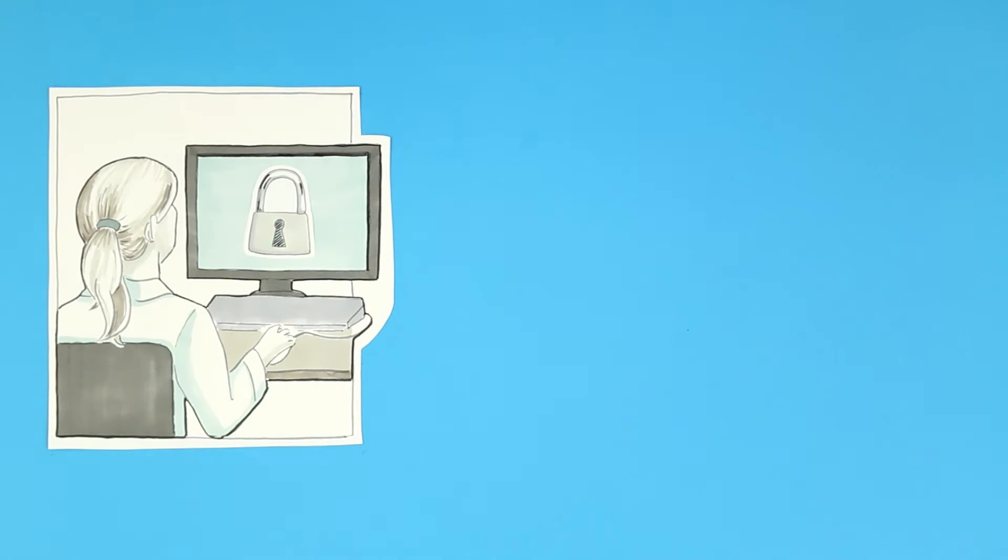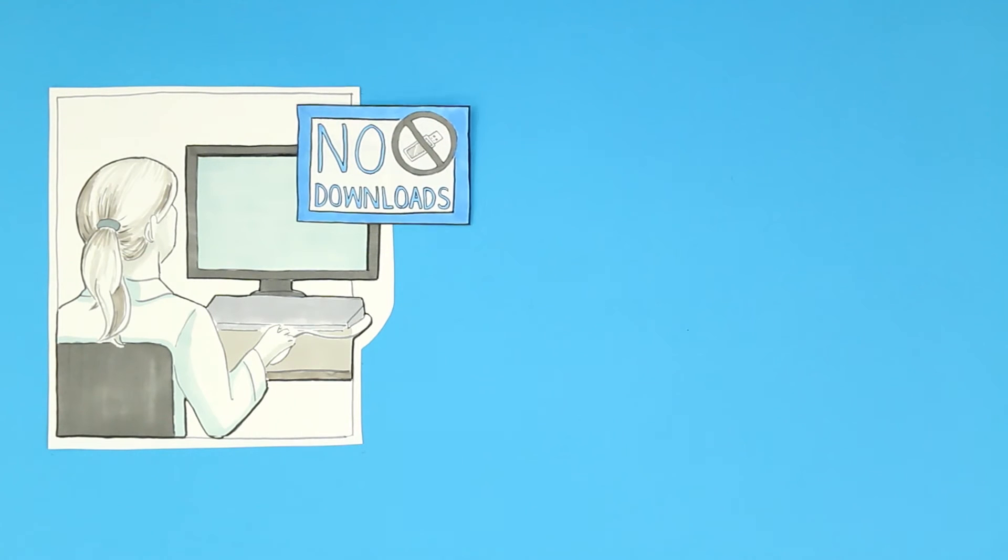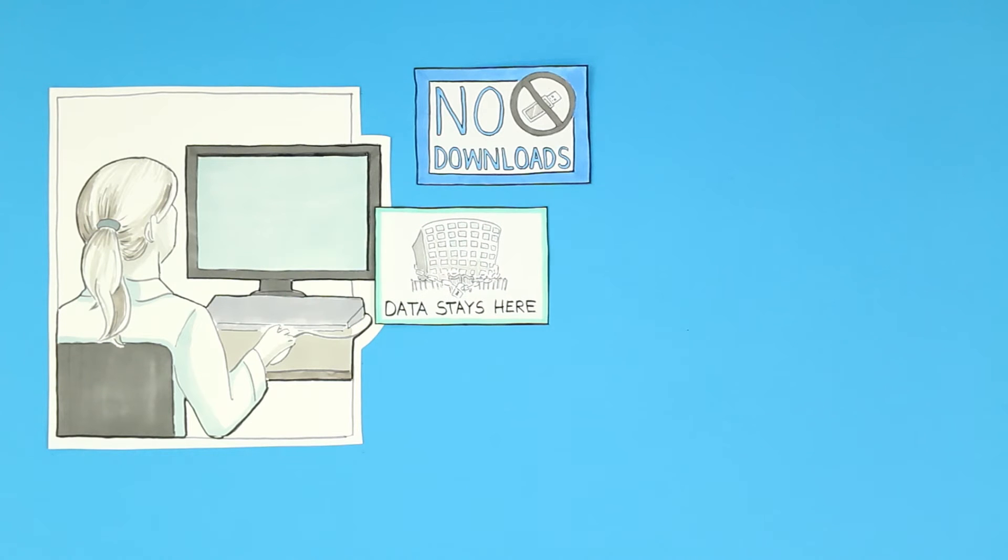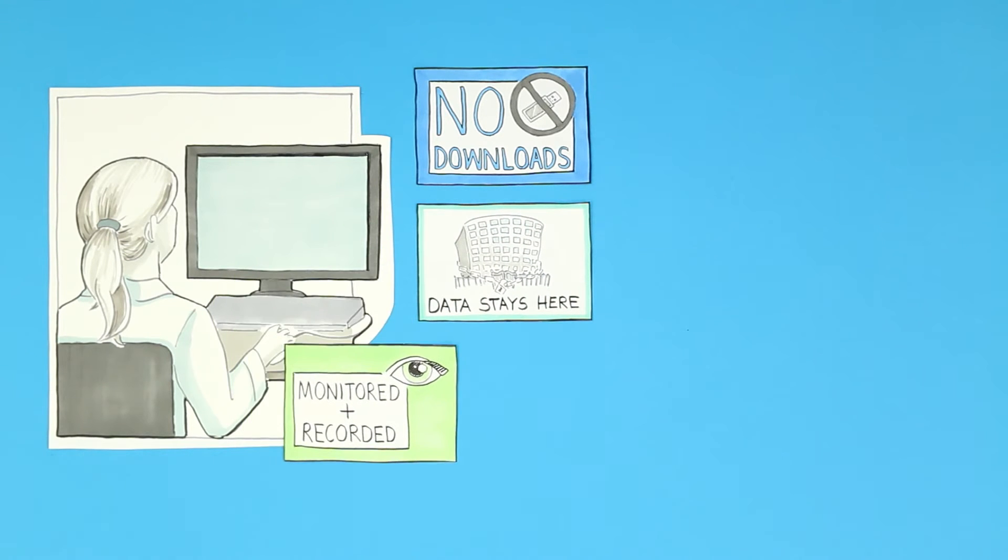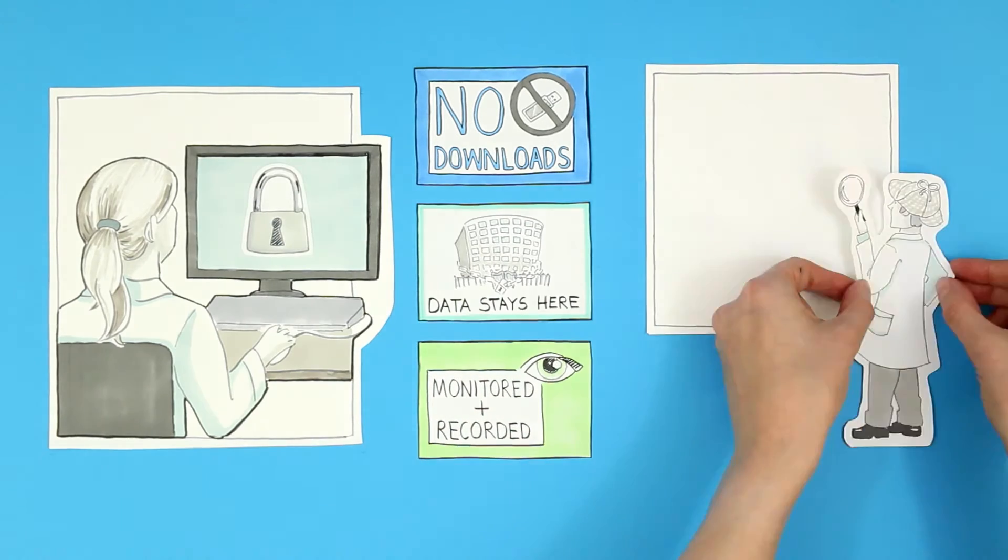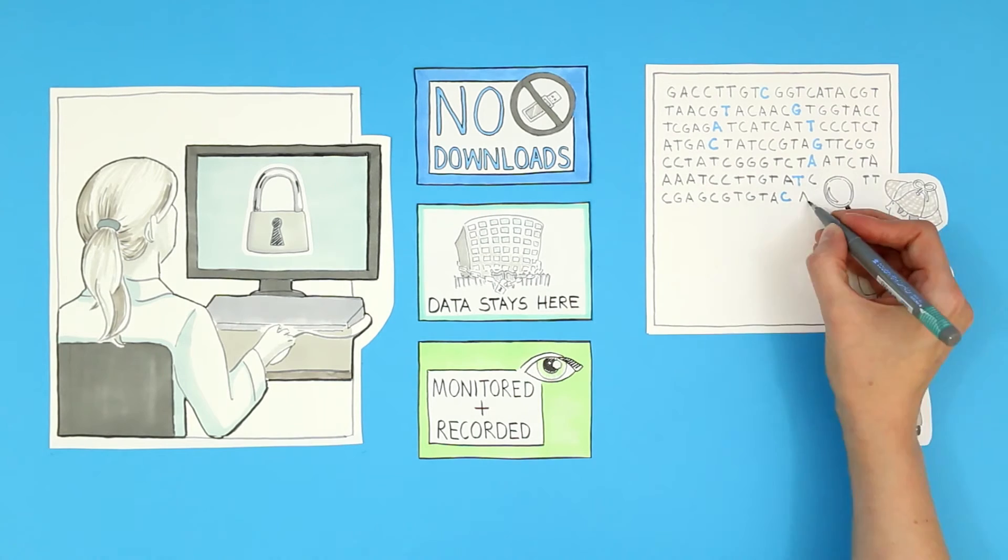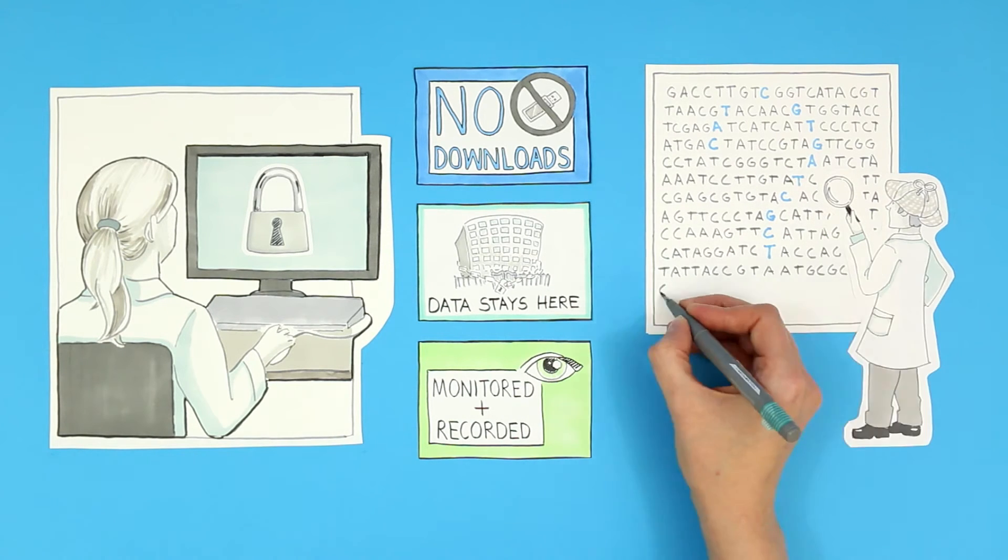They have to go through a secure login. They can't copy or download. The data stays right where it is in the data centre at all times. Genomics England monitors and records what they do. The scientists look for patterns and clues in the data. They're not interested in finding out who the data came from.